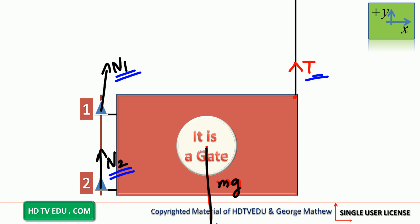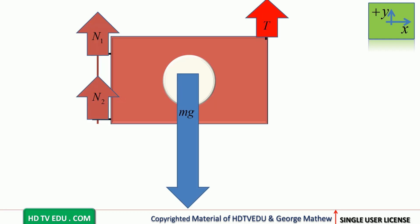So if you are told that net force is zero, then force up has to equal force down. You say N1 plus N2 plus T — all forces acting along positive y — should equal the gravitational force acting vertically down. In the free body diagram, normal force N1, normal force N2, and tension all act vertically up, and the sum of those three should equal the gravitational force arrow acting vertically down.